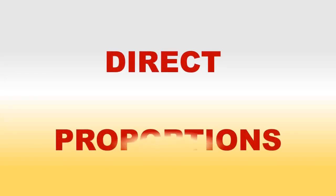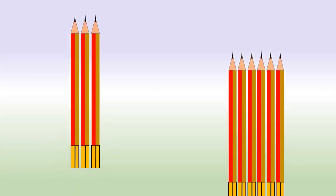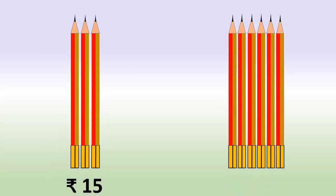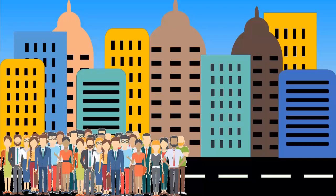Direct Proportions. When the number of pencils increases, the cost also increases. When the population increases, the apartments also increase.